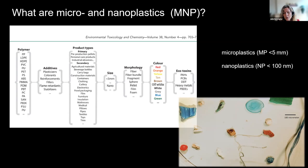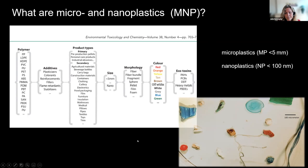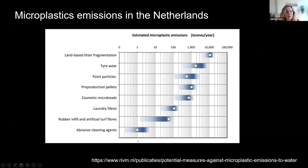They can also absorb chemicals from the environment — so-called ecotoxins. So chemicals, once they make it into the environment, can bind other chemicals in the environment like polychlorinated biphenyls, organochlorine pesticides, or metals. So a very complex group of substances we're dealing with here.